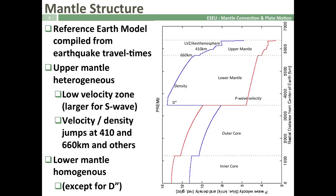We can see that the mantle can be broadly divided into two parts: the upper mantle going down to 660 kilometres, and the lower mantle down to the core-mantle boundary at around 2,900 kilometres. The structure of the upper mantle is largely heterogeneous. We can see major jumps in velocities — a low velocity zone around 100 to 200 kilometres and jumps in velocity at 410 and 660 kilometres.